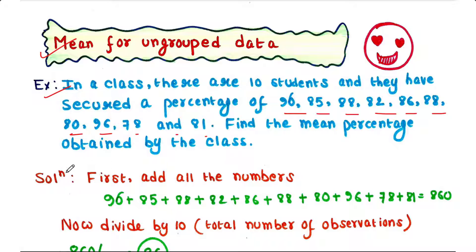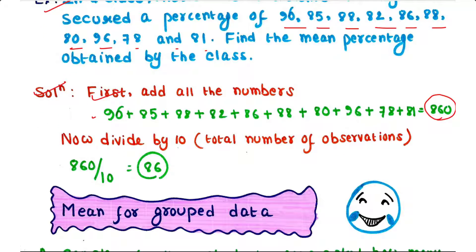So let's see the solution. First, add all the numbers. So when we are adding all the numbers, we will get 860. Now divide it by 10, because 10 is the total number of observations. So 860 by 10 is equal to 86. So 86 is the answer. It is the mean.